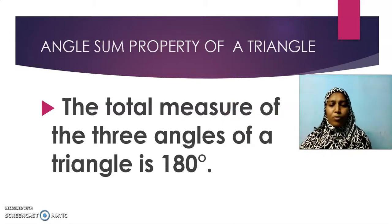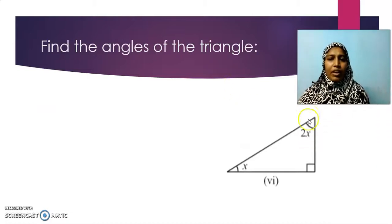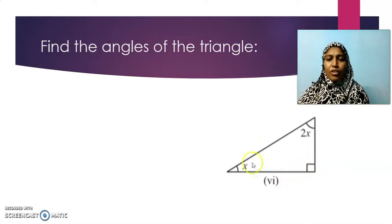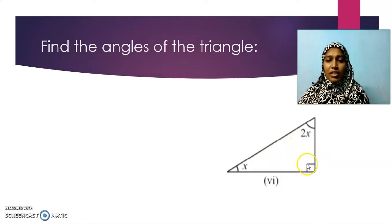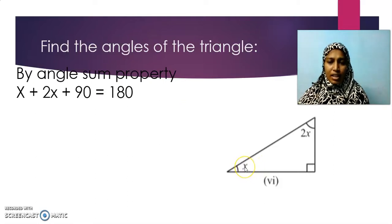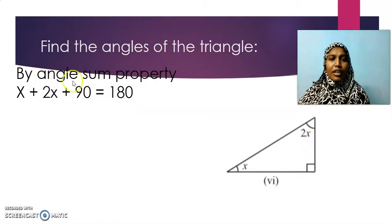Now let us solve a few problems based on this property. Here they have given a diagram — it is a triangle — and they are asking us to find the angles. The angles are X, 2X, and one angle shown with a perpendicular symbol which indicates 90 degrees. By angle sum property, we have X plus 2X plus 90 degrees equal to 180 degrees.